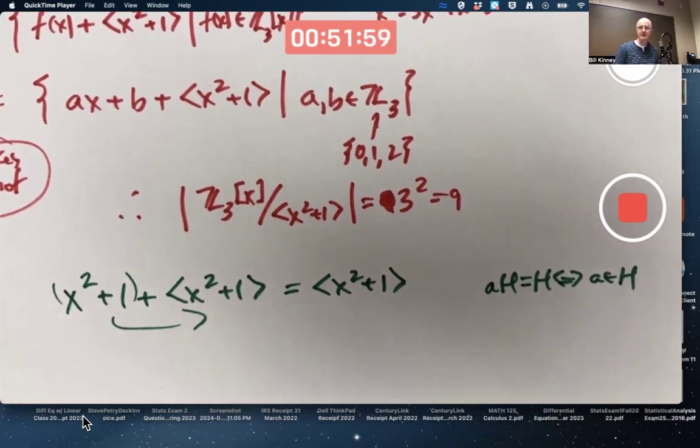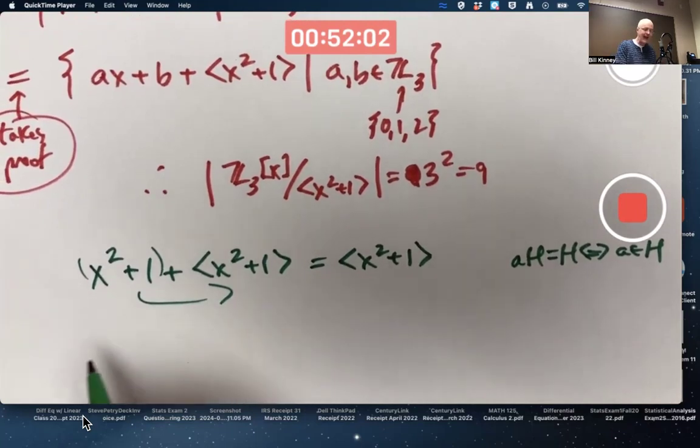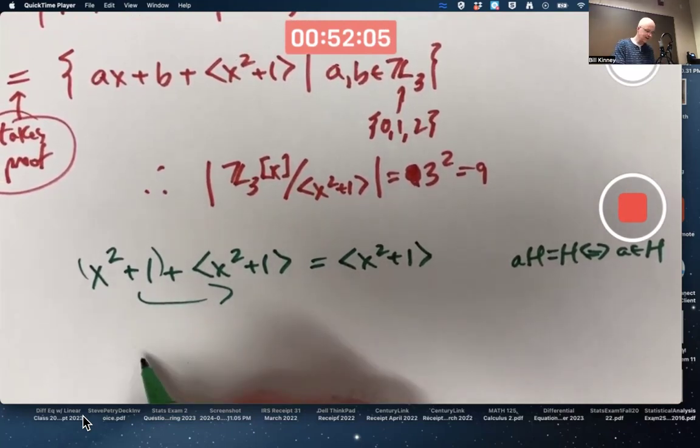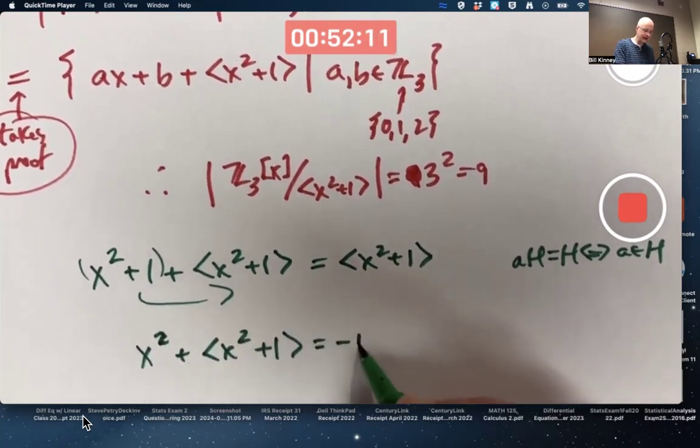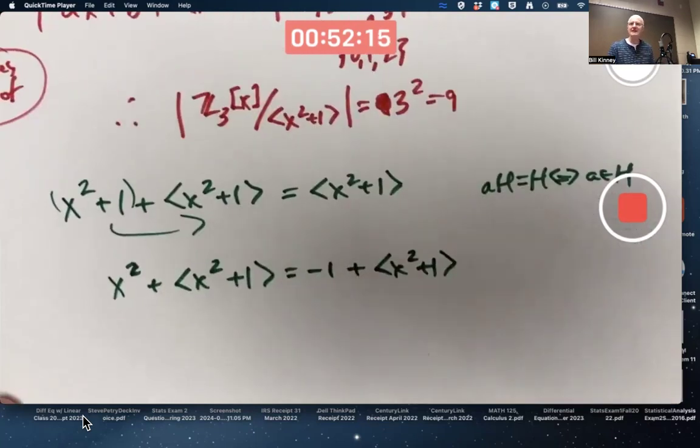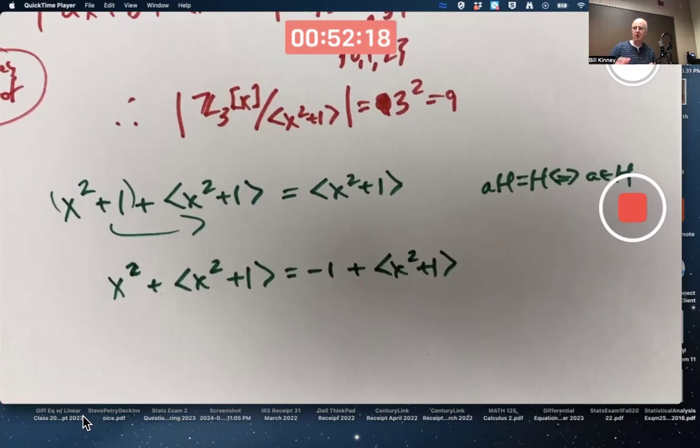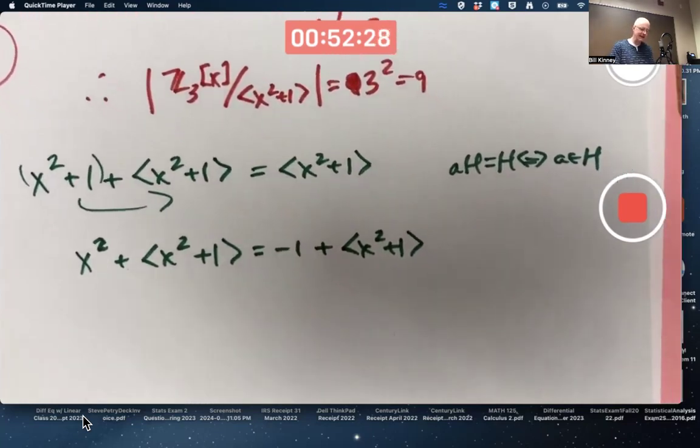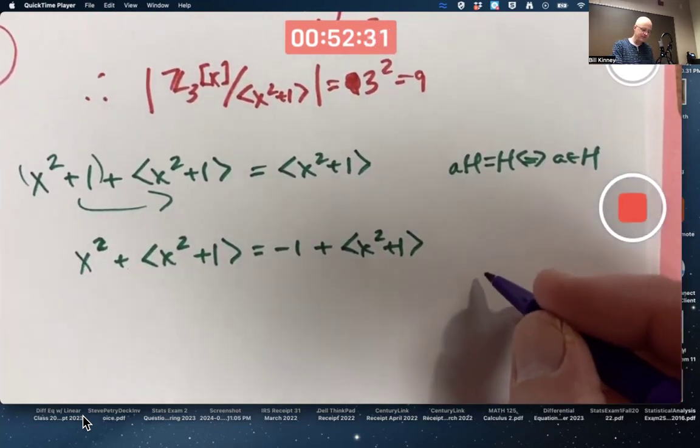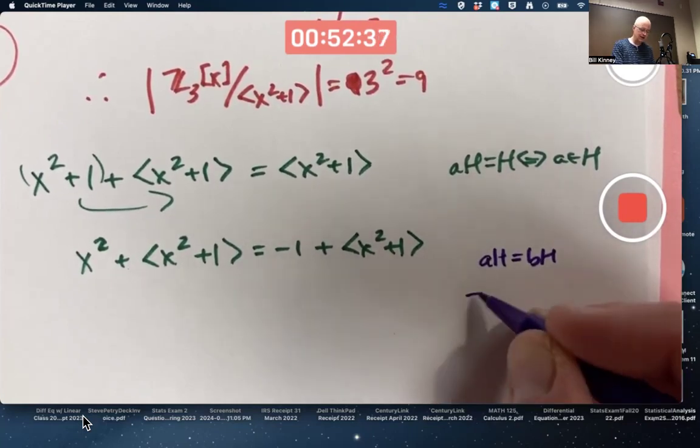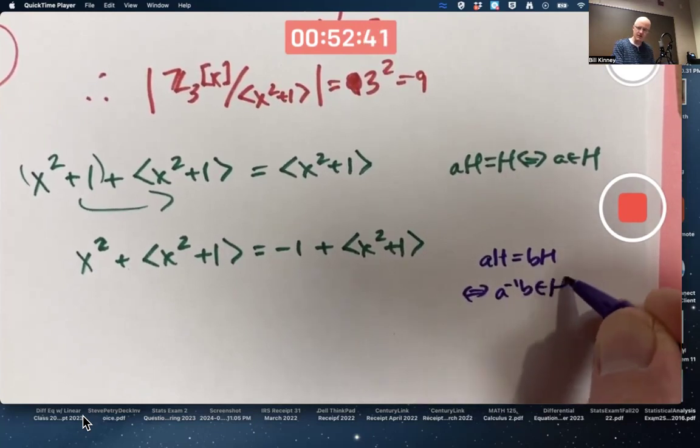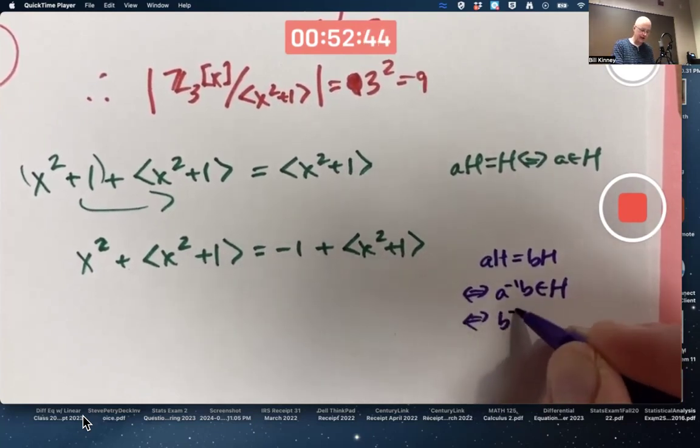You also could, a little informal calculation here, effectively add negative 1 to both sides of this. It's also true that x squared plus the ideal equals negative 1 plus the ideal. How could you justify that? That's sort of an informal justification. I imagined adding negative 1 to both sides. Did I really do that? Not really. What's a more formal justification of this? It's related to another property of cosets.